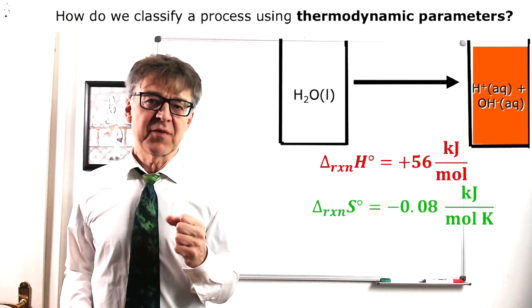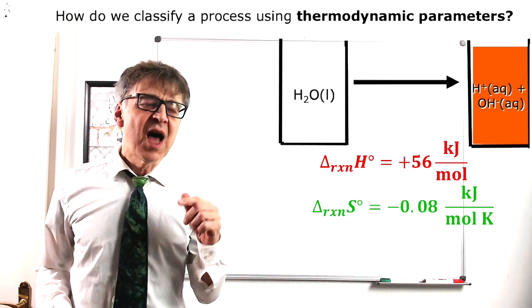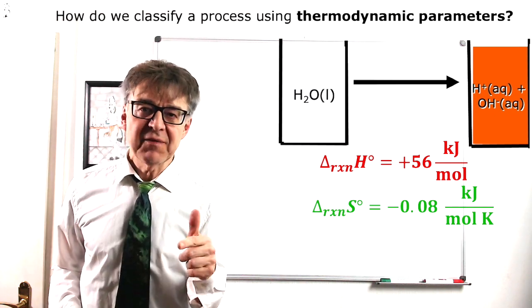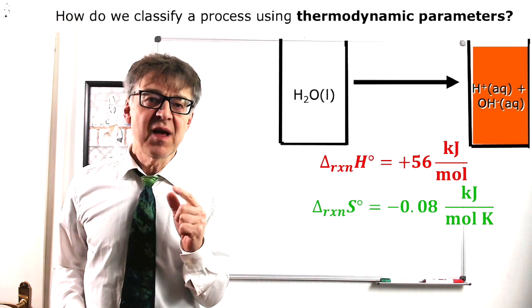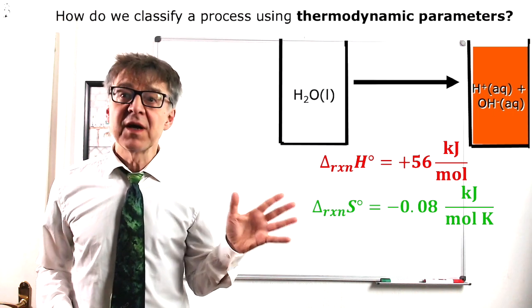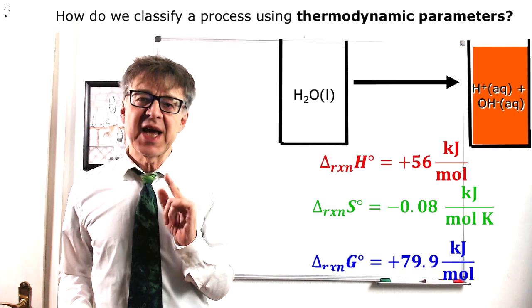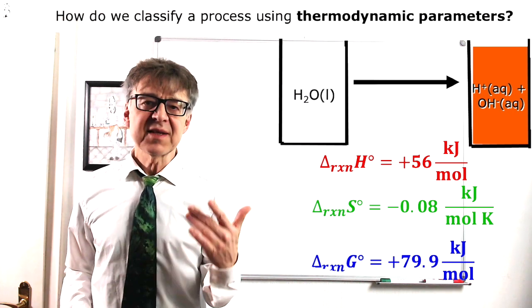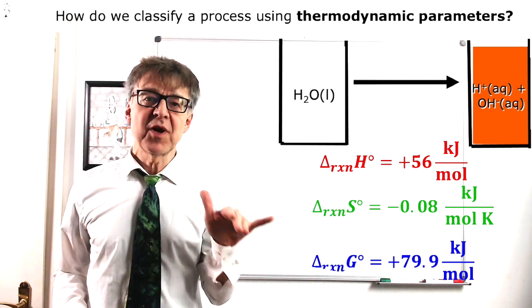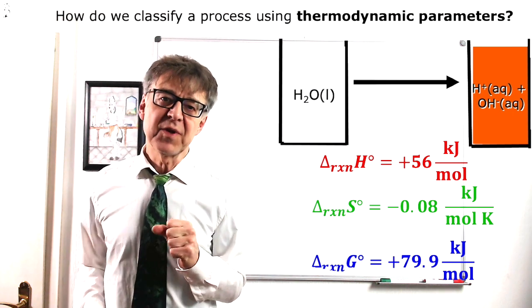The standard entropy of reaction, delta S0 means the pure products are 0.08 kJ per mole less in entropy than the pure reactant. The last number will be the most important one. Gibbs standard free energy, delta G0, the standard chemical drive, has a positive sign. The pure products are 80 kJ more unstable than the pure reactants.